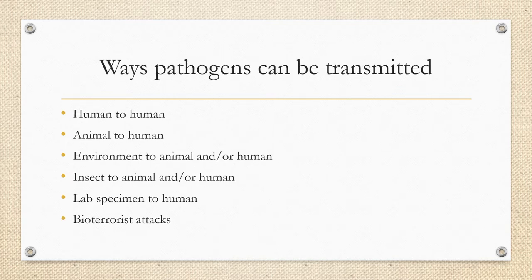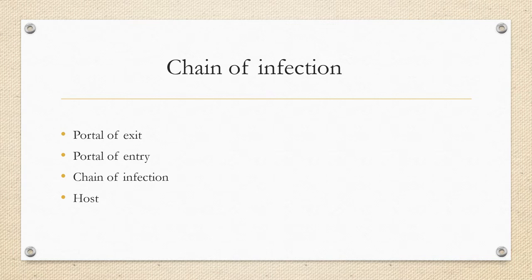There are many ways pathogens can be transmitted: human to human, animal to human, environment to animal to human, insect to animal to human, lab specimen to human, or from bioterrorist attacks. Transmission of a pathogen occurs when it leaves its reservoir through a portal of exit, travels via its mode of transmission, then enters an appropriate portal of entry. This sequence is called the chain of infection.